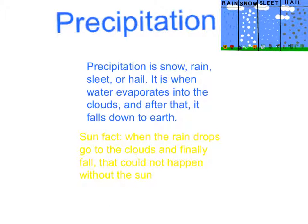Precipitation is snow, rain, sleet, or hail. It is when water evaporates into the clouds and after that it falls down to earth. Sun fact: when the raindrops go to the clouds and finally fall, that cannot happen without the sun.